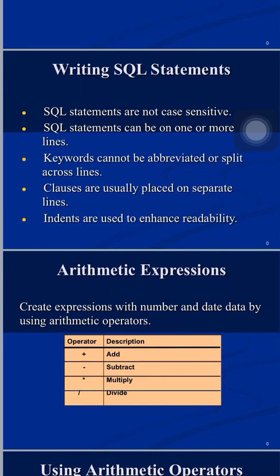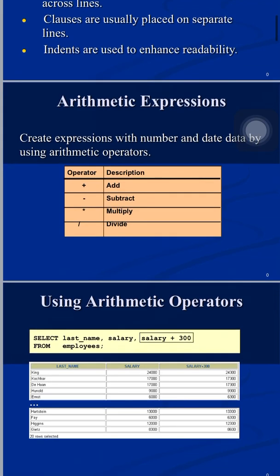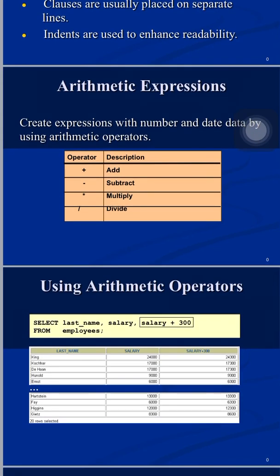We can also perform arithmetic operations using SQL SELECT statements — the four basic operators: addition, subtraction, multiplication, and division. For example, suppose our employees table has columns last_name and salary. If I want to show an incremented salary giving 300 rupees to each employee, I write salary + 300 as an expression. The underlying table is not changed — salary + 300 is only calculated and printed in the output window.